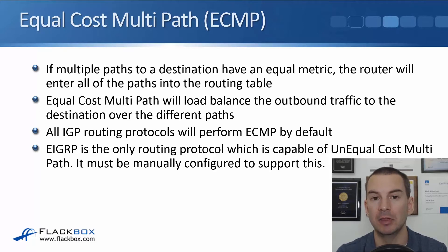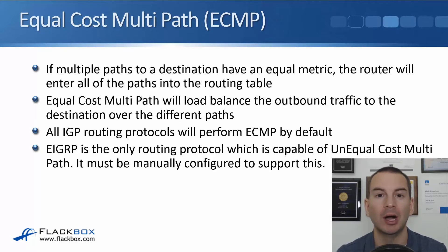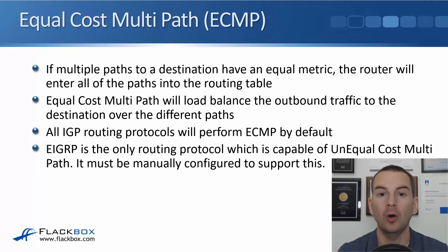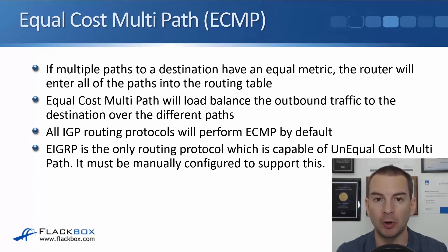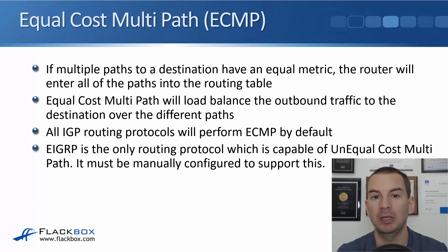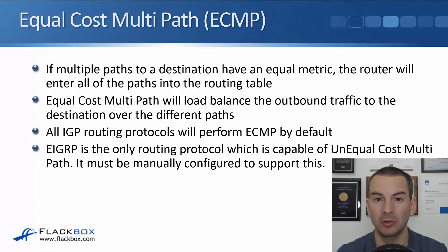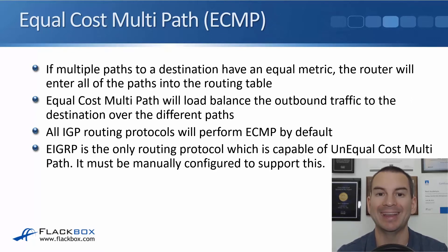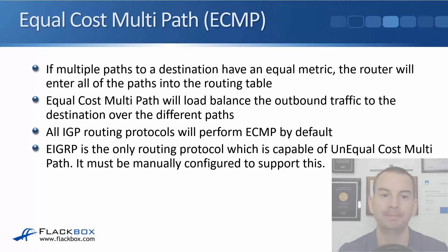EIGRP is the only routing protocol that can do unequal cost multipath. They'll all do equal cost multipath by default, including EIGRP. EIGRP will not do unequal cost load balancing by default, but it can do it if you manually configure it to do so.